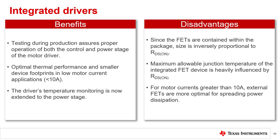Optimal thermal performance is achieved at low motor currents, and temperature monitoring is extended to the power stage. On the other hand, while small solution size is usually an attractive characteristic, thermal performance becomes difficult to manage as power and current requirements increase. In general, if your motor current is greater than 10 amps, an external FET driver would be better for spreading out power dissipation.